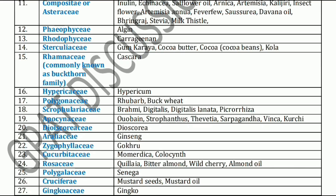Next, Apocynaceae family. Apocynaceae includes Arjuna, Strophanthus, Thevetia, Sarpagandha, Vinca, and Kurchi.